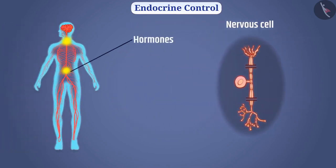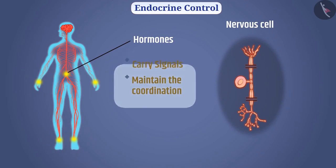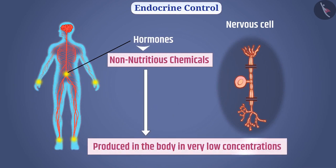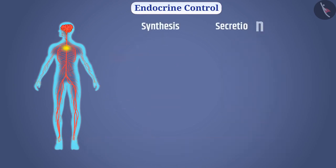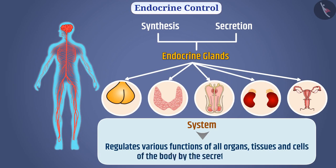In our body, hormones carry signals to all cells and maintain coordination for a long time. Hormones are non-nutritious chemicals produced in very low concentration in the body, used to carry signals to various cells — therefore hormones are called chemical messengers. Synthesis and secretion of hormones is done by the endocrine glands. The mechanism that regulates various body functions through secretion of hormones is called the endocrine system.